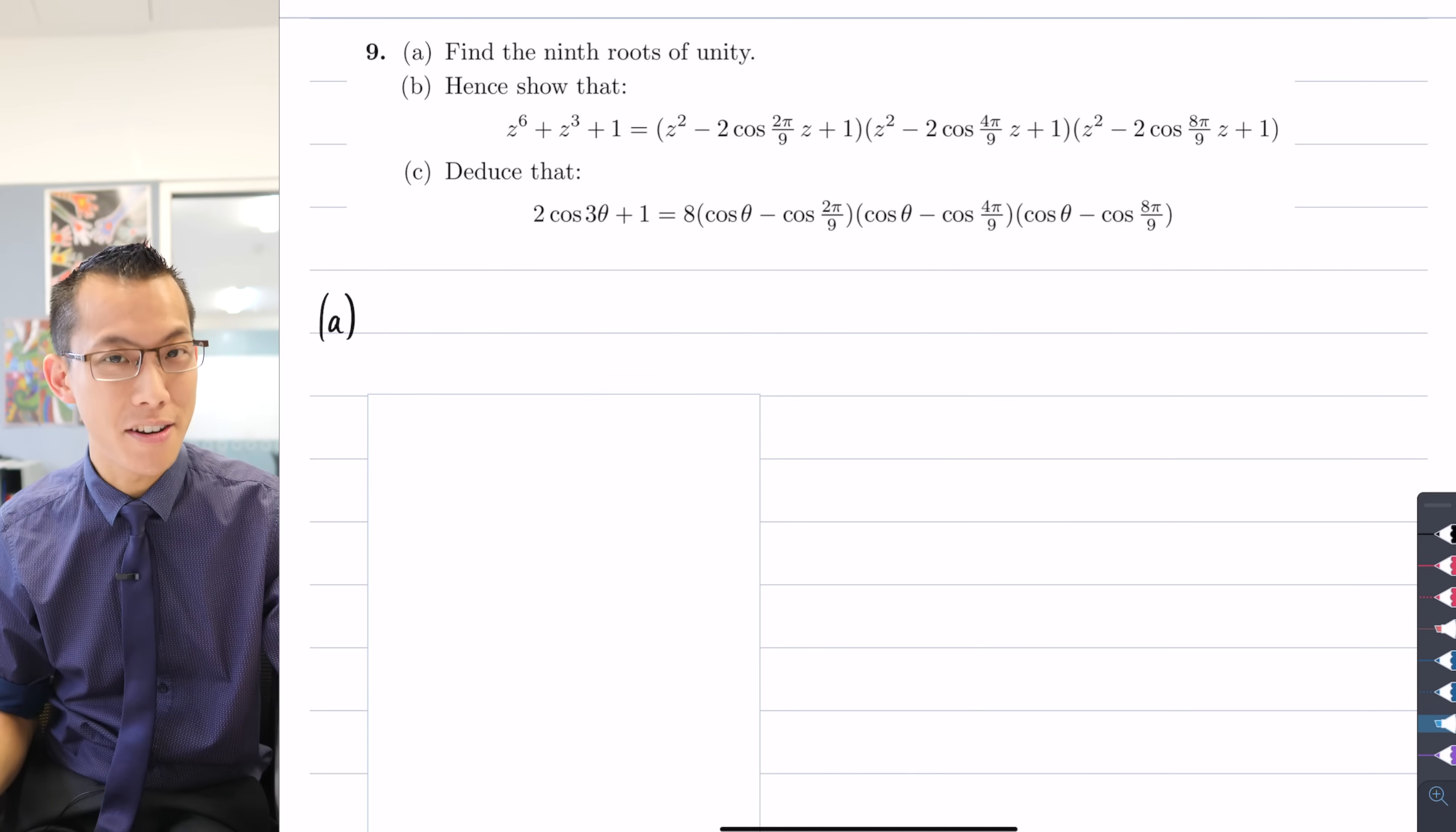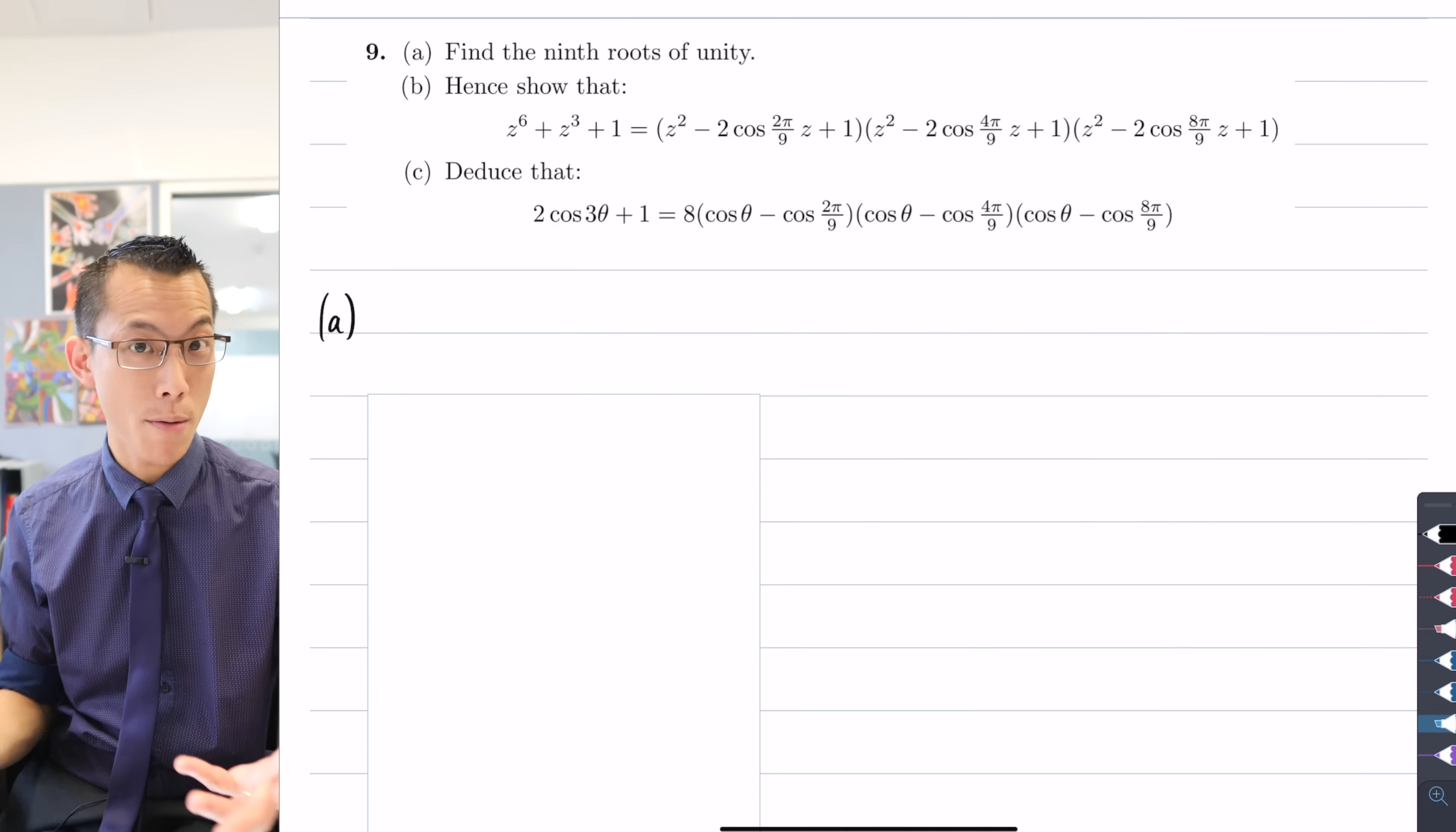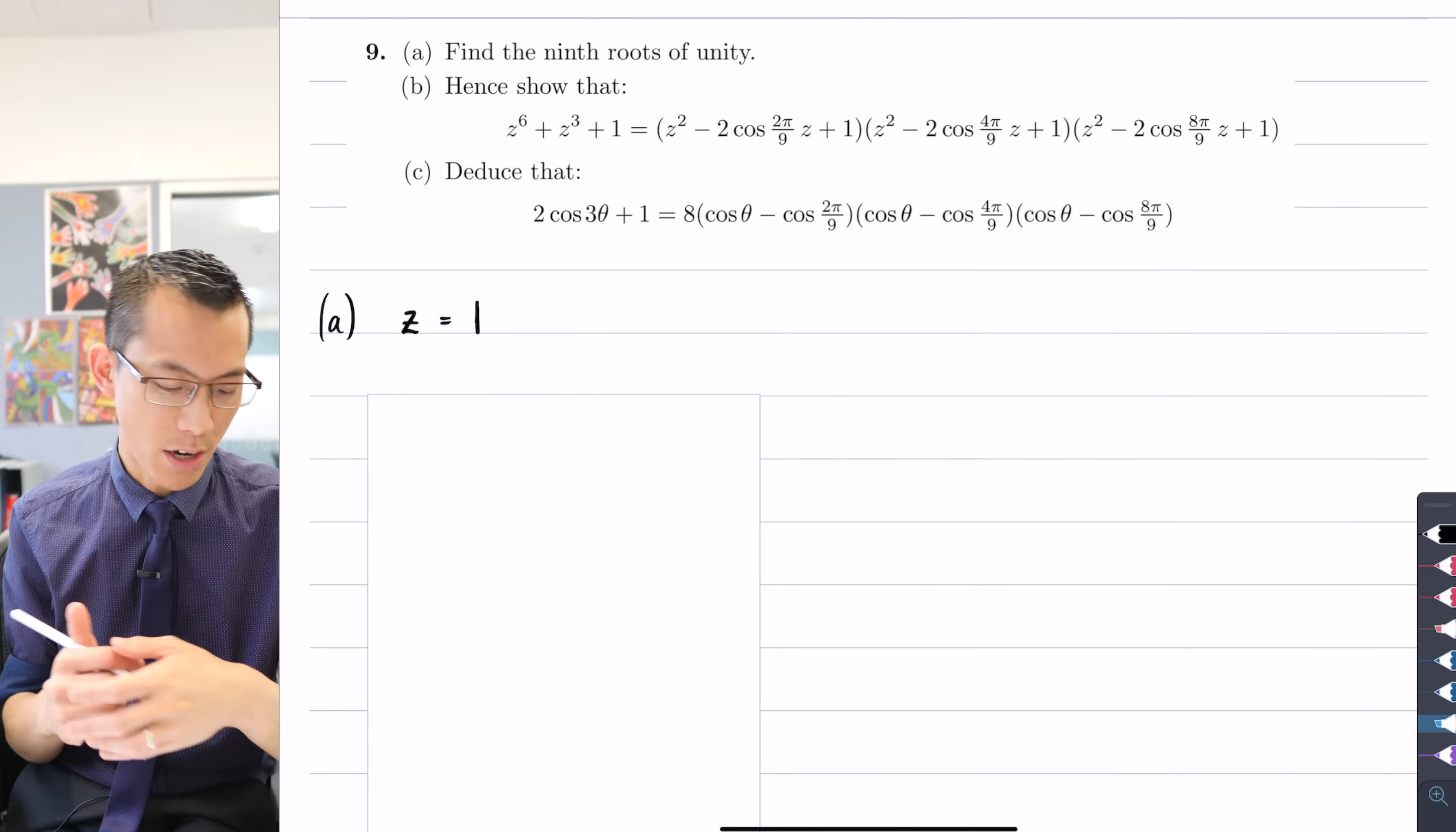First, it says find the ninth roots of unity. Now we've had a look at being able to just say off the bat without any other kind of derivation or working what the roots of unity are. And that's because we know they have very many predictable properties. For example, if we call the roots of unity z1, z2, z3 and so on, we know that the first root of unity is always one because one is a root of itself.